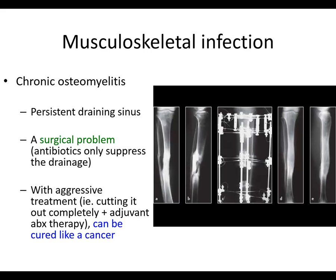Chronic osteomyelitis is when you essentially have dead bone with a persistent draining sinus. Chronic bone infection is a surgical problem — antibiotics alone are only going to suppress the drainage. Any ID doctor will tell you the cure is really surgical debridement. That said, with aggressive treatment — cutting it out completely and adjuvant antibiotic therapy — you can cure people of chronic osteomyelitis, kind of like a cancer.